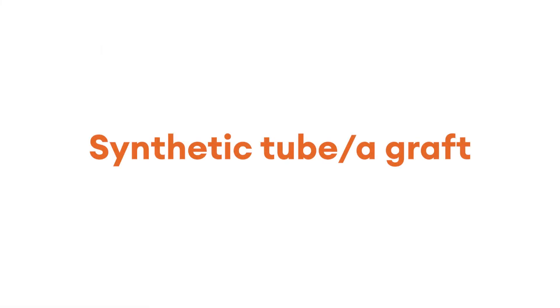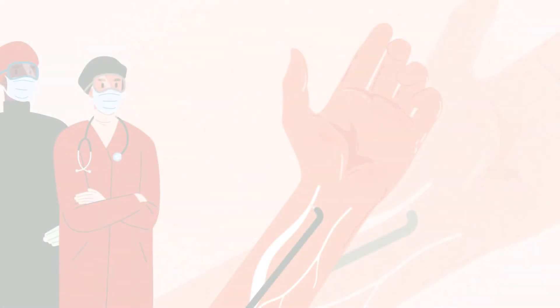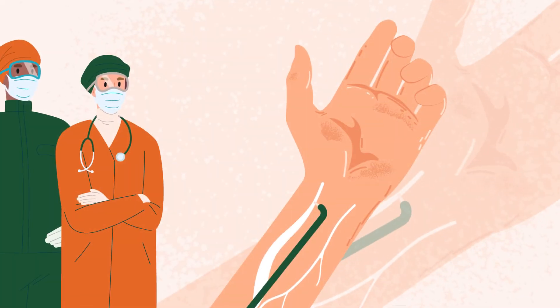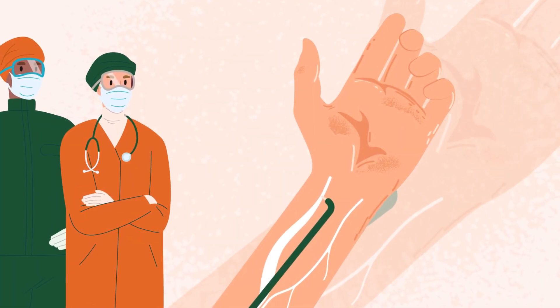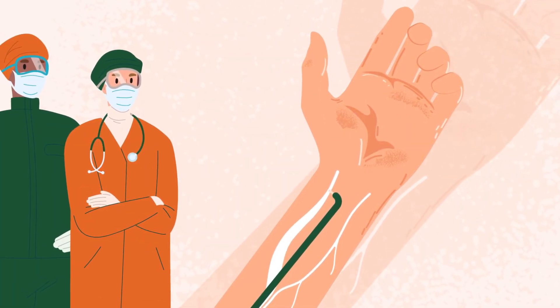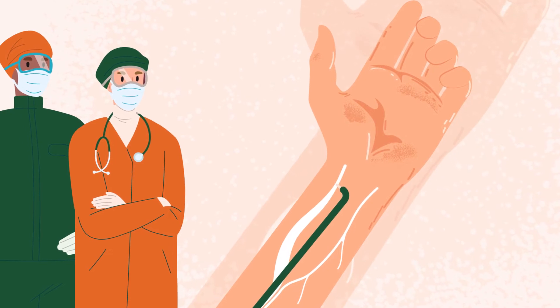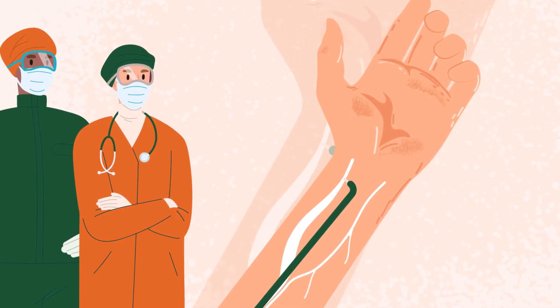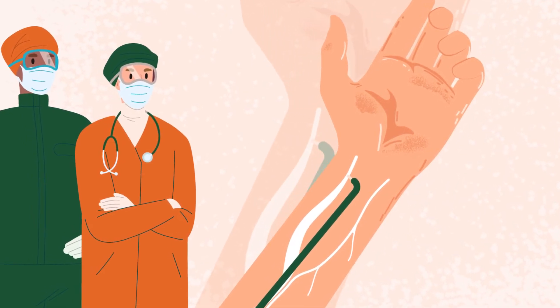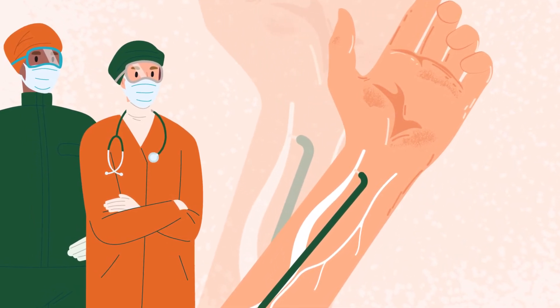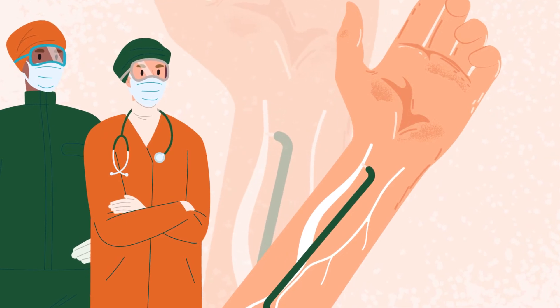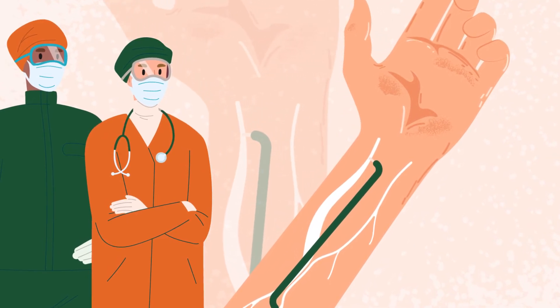If your vessels are too small or weak to make an AV fistula, then a synthetic tube, or a graft, is placed under your skin to connect the artery and the vein. To make the graft, a small operation is required, and it can take a few weeks before it is ready to use. Clotting episodes and infections are more likely to occur with a graft than an AV fistula.